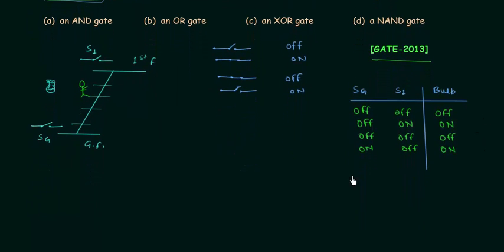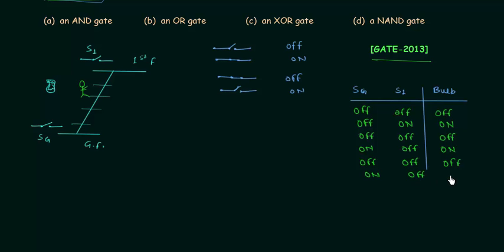Now the last case, which is the most important. You turn off SG so both SG and S1 are off, which turns off the bulb. Then you turn on SG: SG is on, S1 is off, and the bulb is on (1,0,1). You go to the first floor and turn on S1 as well — this will turn off the bulb (1,1,0).